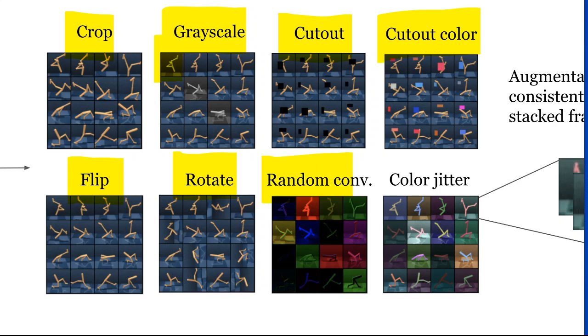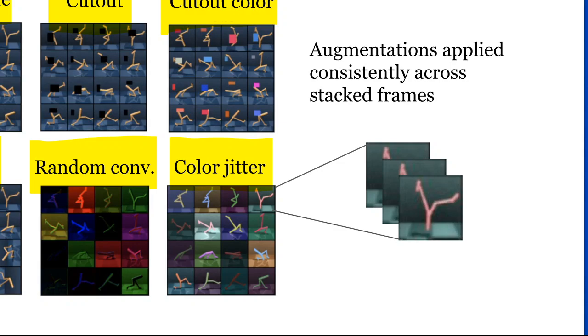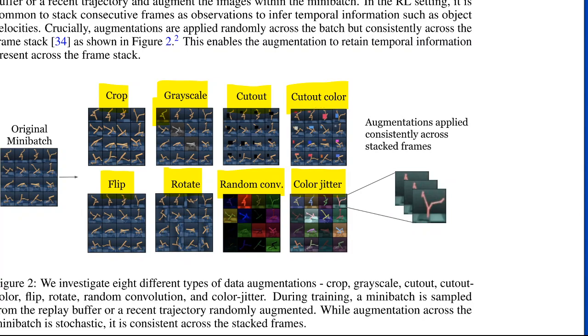Random conv means you randomly convolve it with a filter, in this case, some red or blue or yellow filters. And color jitter means that you jitter around the colors in a way that doesn't mess up the image too much. You basically just change the colors on the image, but the overall image still looks the same.